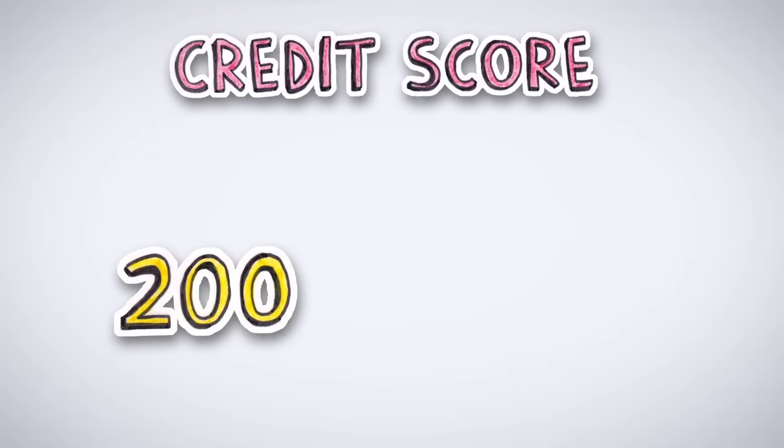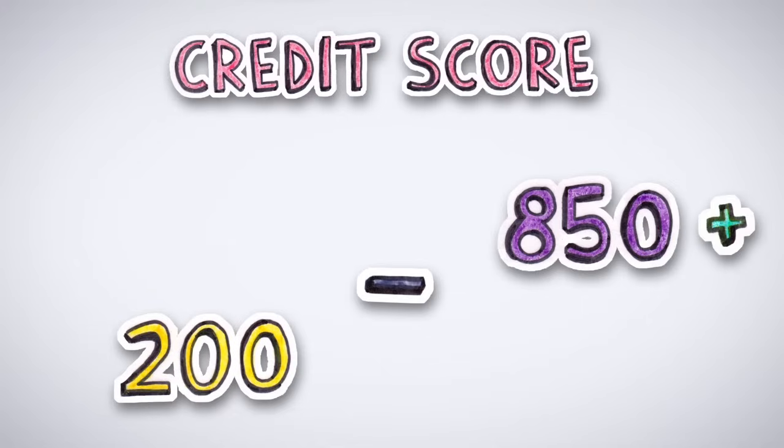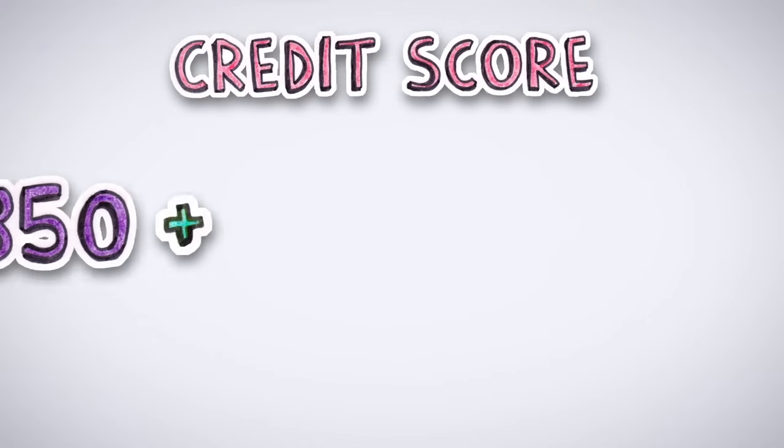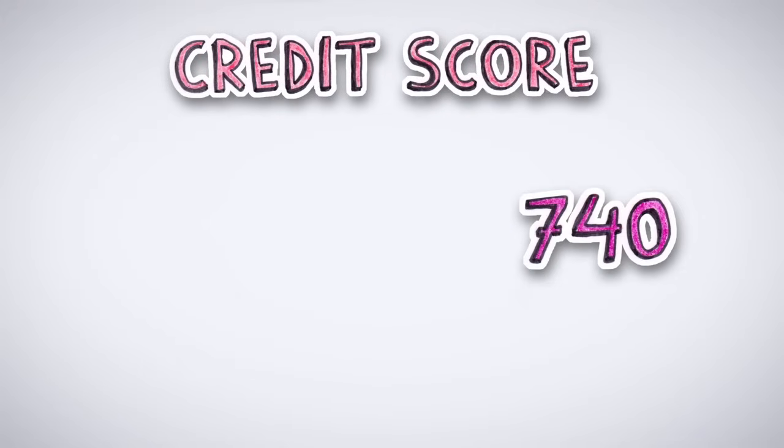Scores typically range from 200 to 850. The higher your score, the better your credit is and the better rates you'll get. The average score in the United States is around 711. A score of around 740 and above usually gives you the best interest rates.